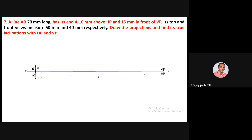The top view is 60 mm long, so draw a line parallel to XY at a length of 60 mm. From this, extend the projector to identify the true length in the front view. The true length of the line is 70 mm. Take A-dash as center, 70 mm as radius, and draw an arc to cut this projector.